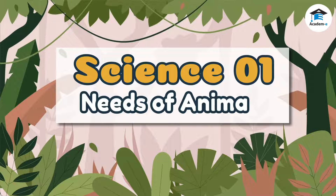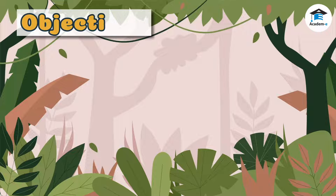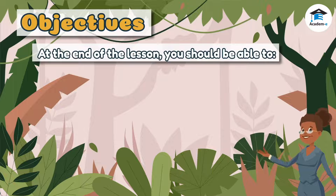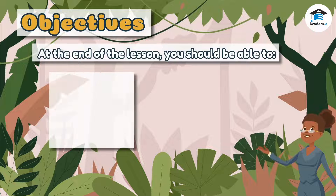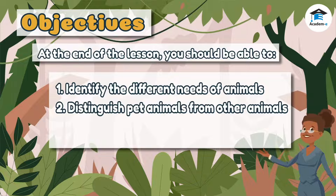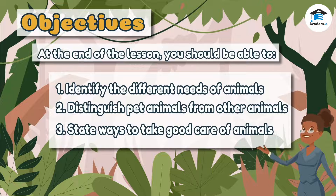Needs of Animals. Objectives: At the end of the lesson, you should be able to identify the different needs of animals, distinguish pet animals from other animals, and state ways to take good care of animals.